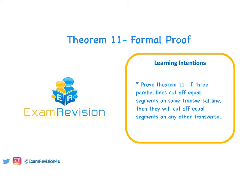Hi guys, in today's video we're going to be going through the formal proof of Theorem 11. Theorems 11, 12 and 13 are the new higher level proofs that you are required to know by heart. Theorem 11 states that if three parallel lines cut off equal segments on some transversal line, then they will cut off equal segments on any other transversal.